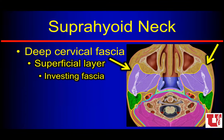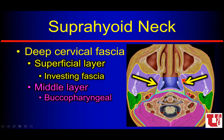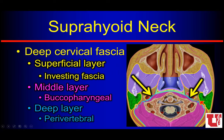The deep layer of cervical fascia is separated into three main areas. There's a superficial layer — the investing fascia shown here in yellow. Then we have a middle layer, the buccopharyngeal fascia, shown here in pink or fuchsia, that's around the upper digestive tract. And then we have the deep layer, or perivertebral fascia, that's around the vertebral body and all the paraspinal muscles. In the suprahyoid neck, we again see the superficial layer in yellow, the middle layer in pink, and the deep layer in blue.